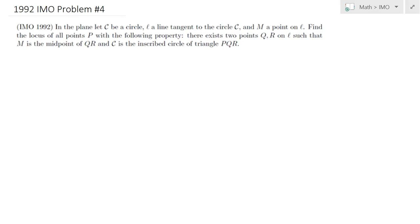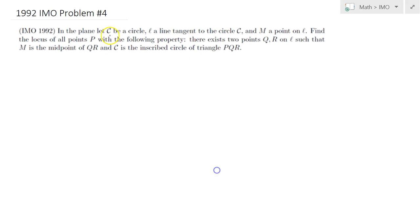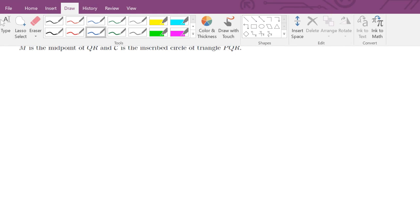Hello everybody, in this lecture we will be going over 1992 IMO problem number four. In the plane we are given a circle C, a line L tangent to that circle, and a point, a random point M on that line. So let me go ahead and draw this setup.